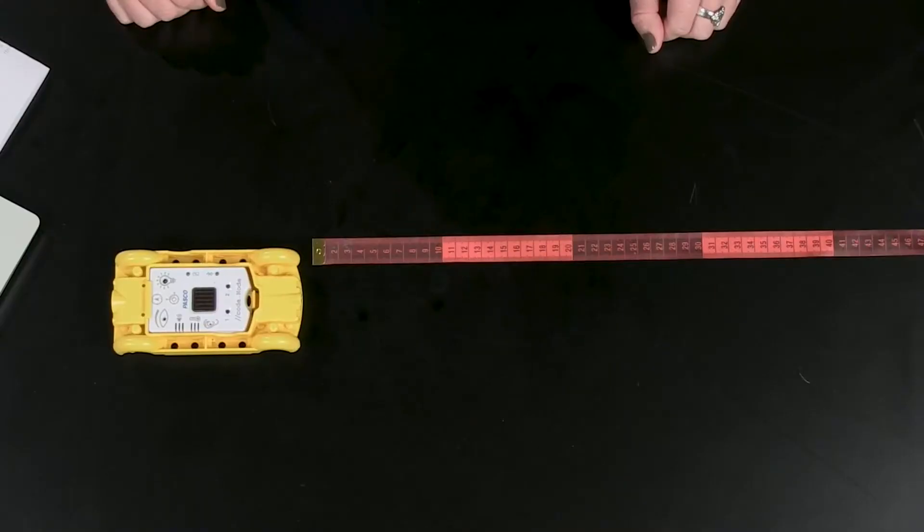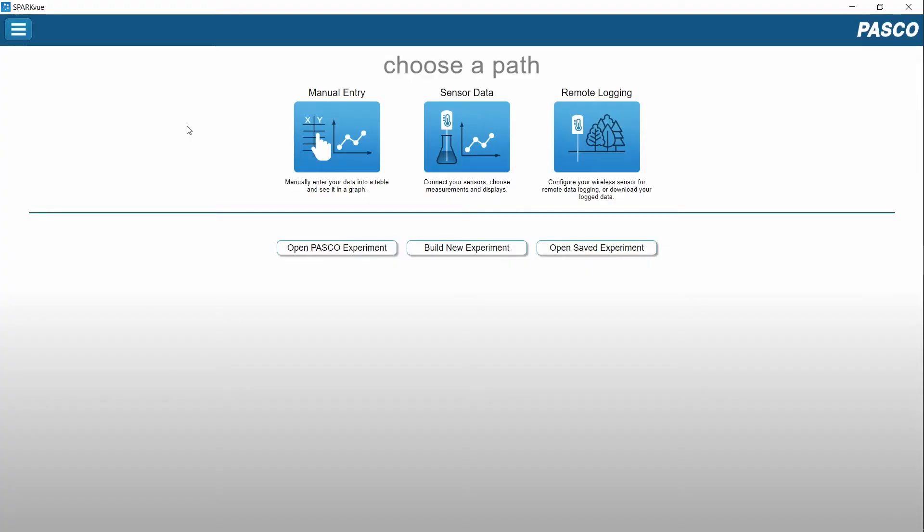This activity not only has a focus on coding with functions, but also reinforces the formula for circumference of a circle and how to use it to solve problems. The only materials needed are the CART, CodeNode, and access to SparkView software.